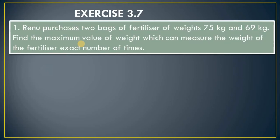Now the actual exercise. Question 1: Renu purchased two bags of fertilizer of weights 75 kg and 69 kg. Find the maximum value of weight which can measure the fertilizer an exact number of times. Think of it like two buckets of water — you take a small container to measure both. This is a division technique, so we apply HCF.